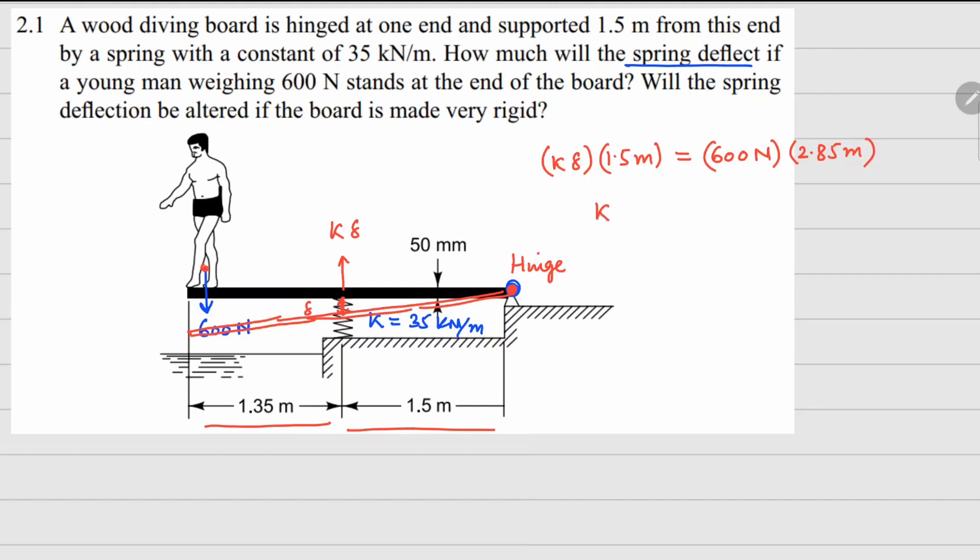Now this k value is given to us, k is 35 kilonewtons per meter. So if I solve for delta from here, delta is 600 times 2.85, this meter and this meter will cancel out. Remember 600 is in newtons so it goes on top and your k value is 35 kilonewtons per meter, so now this newton cancels out. There is still that kilonewton sitting there and there will be this 1.5 here.